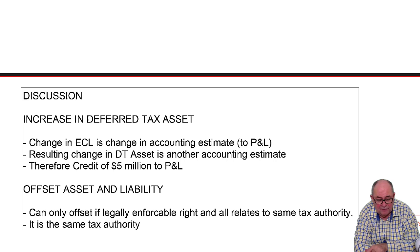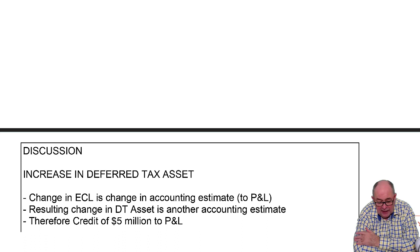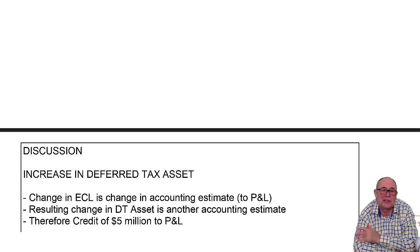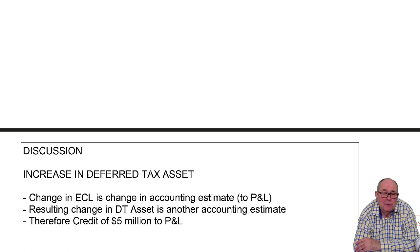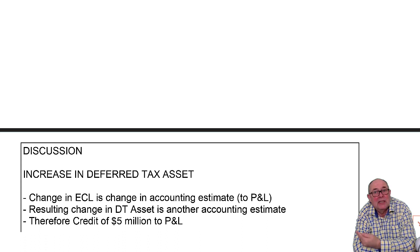The change in the expected credit loss — the bad debt — is an accounting estimate. So the deferred tax asset is the other side: the extra tax relief you'll get. They'll put a credit to the tax charge of 5 million in the P&L. The only situation where prudence comes in is things like losses — if you've got a net loss in the accounts, can you recognise the deferred tax asset? It depends on whether you're going to make profits in the future. But there's nothing to do with losses here — this is just about bad debts.